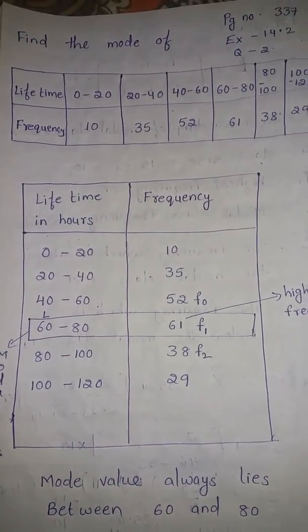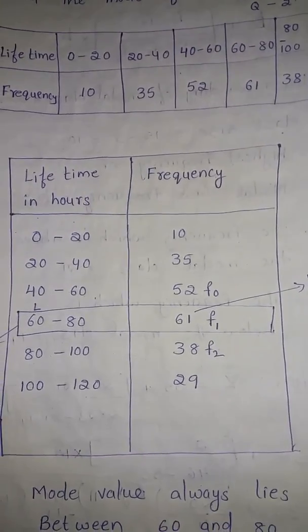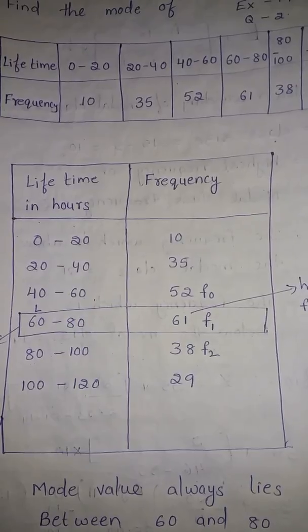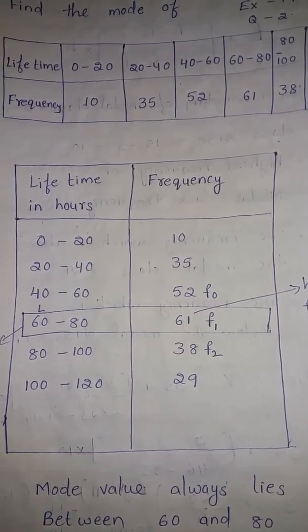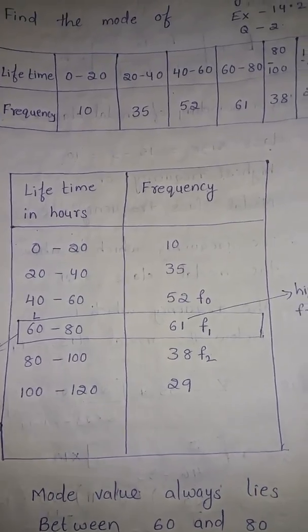Here 0 to 20 the frequency is 10, 20 to 40 the frequency is 35, 40 to 60 the frequency is 52, 60 to 80 the frequency is 61, 80 to 100 the frequency is 38, 100 to 120 the frequency is 29.